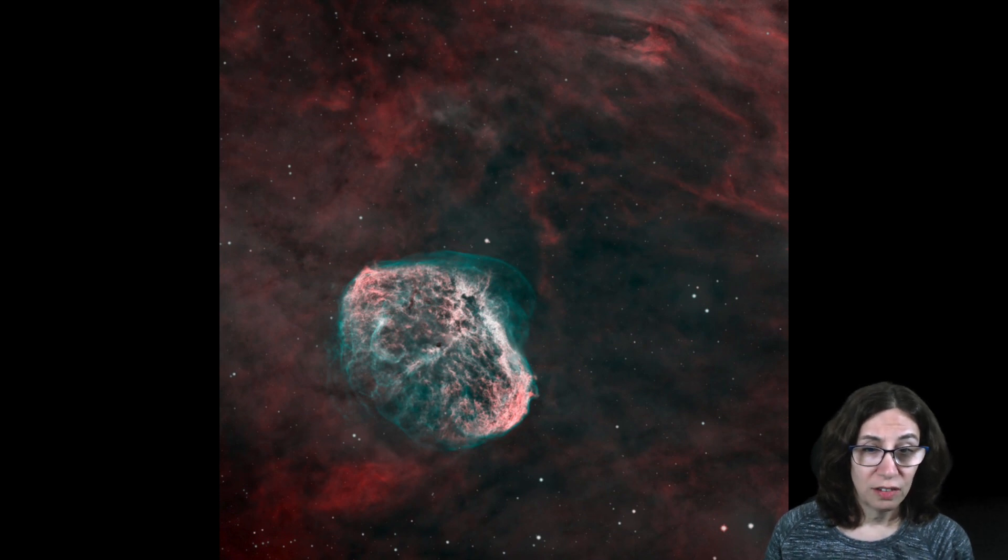The inward-traveling one ends up heating up the stellar wind to temperatures that emit x-rays. The surface temperature of WR 136 is so high that it emits a lot of ultraviolet light, and that UV light is what causes the shell of gas to glow, and that's what we see in our eyepieces and cameras.